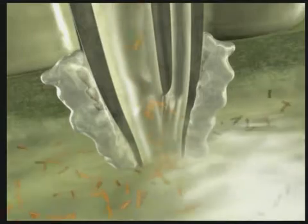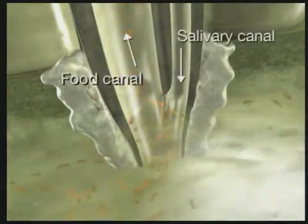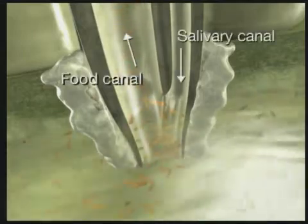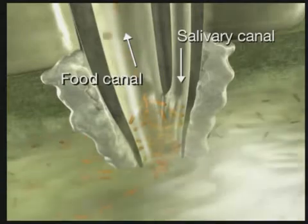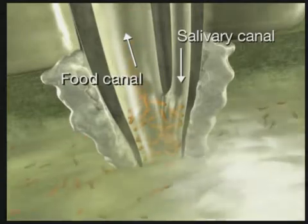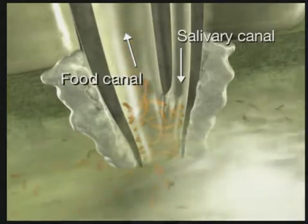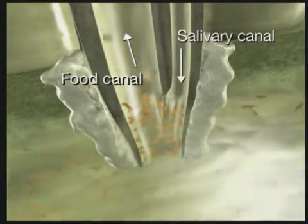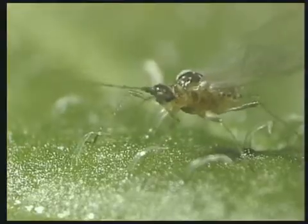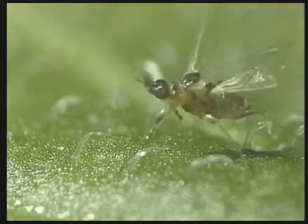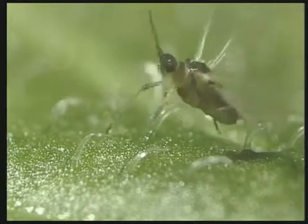The virus particles become attached to the epicuticular lining of the food canal. The aphid has turned into a virus vector.